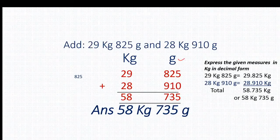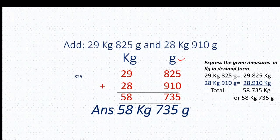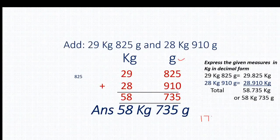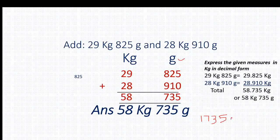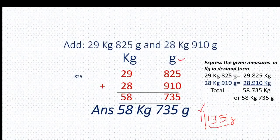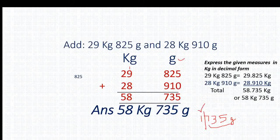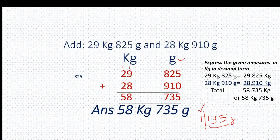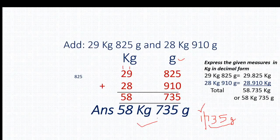17 means 7 we write here — 17 means 1735 gram. This one will be 1 kg and the remaining part is 735 gram. So 735 gram we have already written and 1 kg will be added to the kg column. So 1 plus 9 equals 10, 10 plus 8 equals 18 — 8 we write here and 1 will be added to the next column. So 1 plus 2 plus 2 equals 5. Our answer is 58 kg 735 gram.